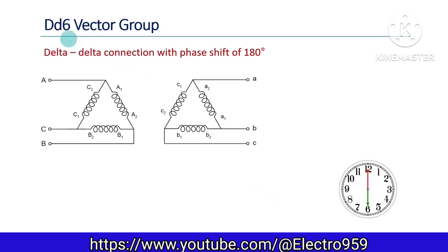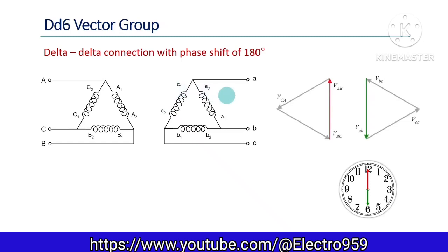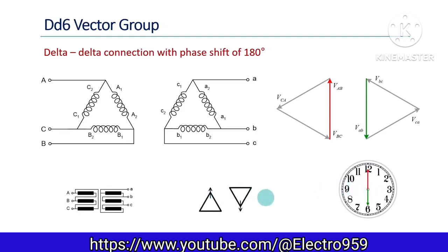Similar is the case with the DD6 vector group. Both the primary and secondary are delta connected, but the polarity of each winding is reversed on the secondary side. On the primary side it is A1, A2, and on the secondary side it is A2, A1 — and similarly in the other windings as well. This results in a 180-degree phase shift in all the voltages, again corresponding to the 6 o'clock position. The simplified connection diagram and displacement diagram are shown.